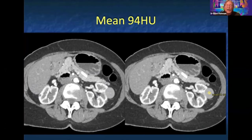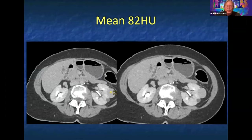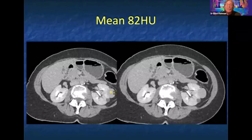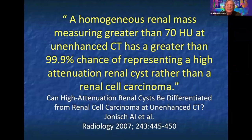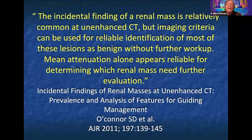If the patient is still on the scanner, have the techs get a few non-contrast scans through the kidney to confirm it's a high-density cyst. If you don't have non-contrast scans, bring the patient back. Remember, 25 percent of patients who go to surgery for renal cell carcinoma today have benign lesions — someone calls it papillary RCC, the patient gets a partial nephrectomy, and then gets good news it was benign, needing no surgery at all.